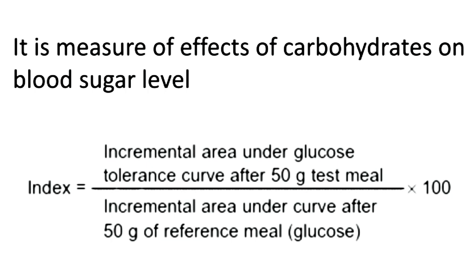Glycemic index can be calculated using a formula: the incremental area under the glucose tolerance curve after 50 grams of the test meal is divided by the incremental area under the curve after 50 grams of the reference meal (that is glucose), and multiplied by 100. So we are comparing the effect of 50 grams of the test meal to 50 grams of the reference meal, multiplied by 100.